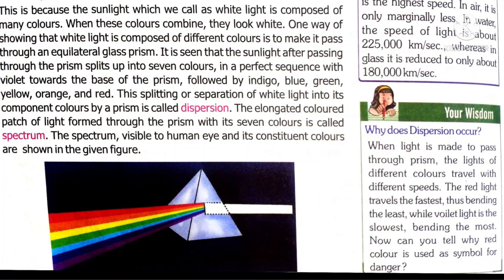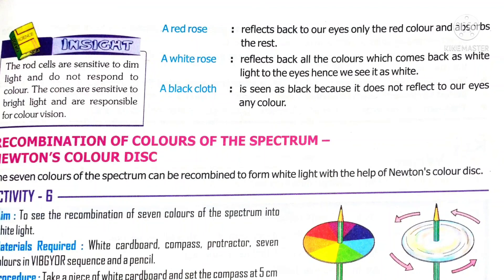We can see different colors because our eyes have different cells — rods and cones — present in the retina. Rod cells are very sensitive to dim light, whereas cone cells are very sensitive to bright light. If you see a red rose in blue light, it appears black. This is because the red rose absorbs the blue light and reflects nothing, so no color is reflected and it appears black. If you observe a red rose in sunlight, you see red color because it absorbs all other colors of white light and reflects only red.